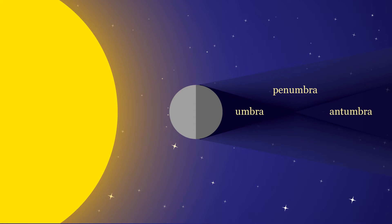The umbra is the region that does not receive any light due to the position of the eclipsing object, while the penumbra and antumbra are partially illuminated.